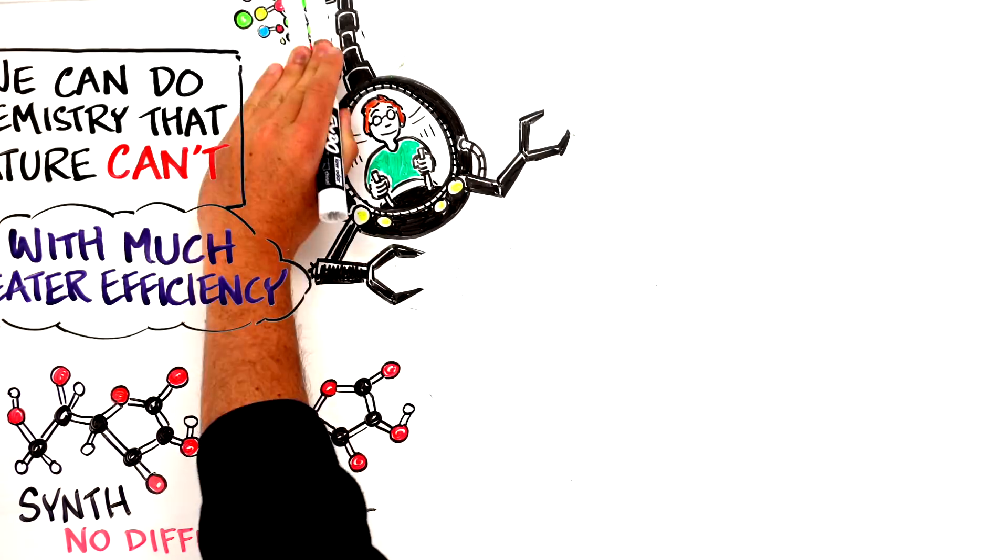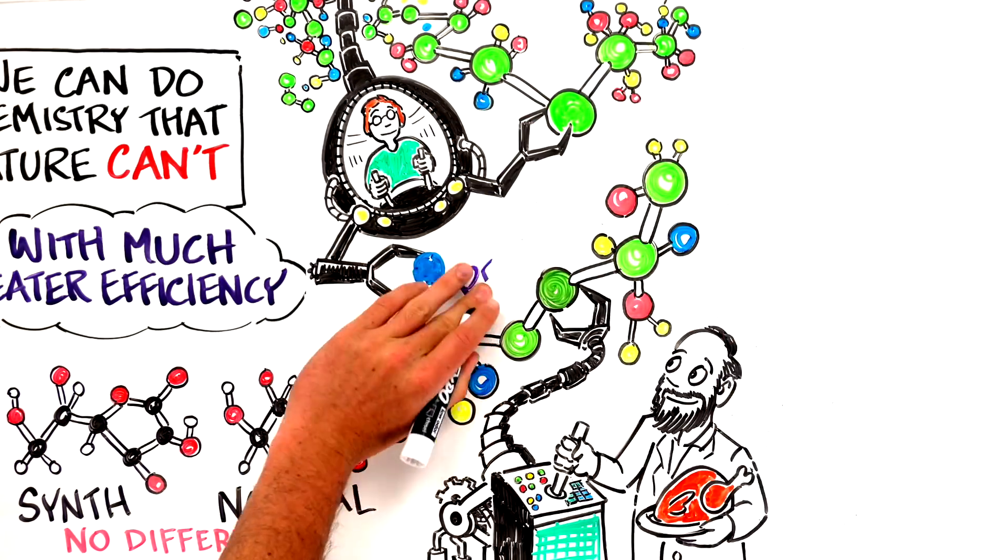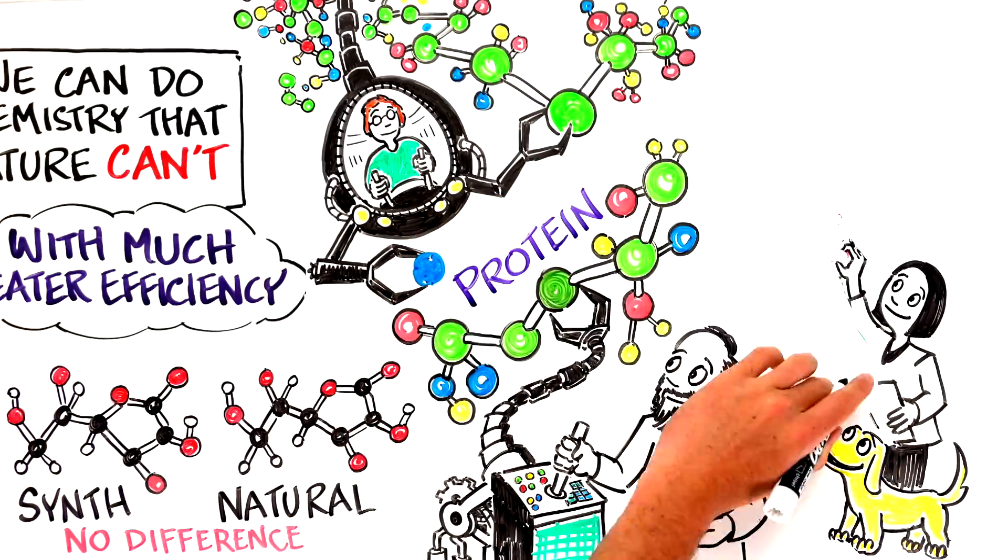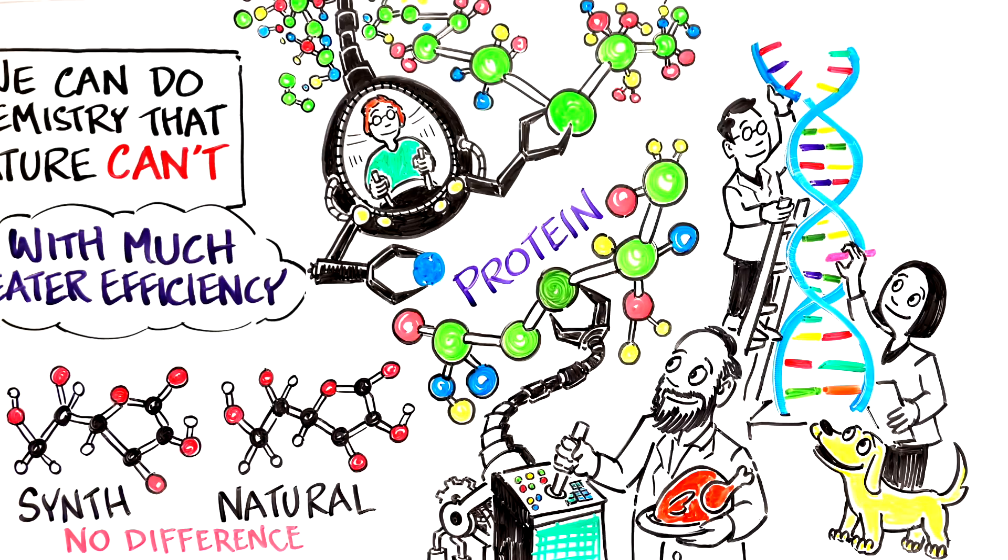From simple molecules, we soon learned how to synthesize large biomolecules like proteins and DNA. We developed techniques like solid phase peptide synthesis, which makes it absolutely trivial to synthesize any protein we want. The advent of CRISPR and gene editing technology has made it easy to edit DNA sequences.